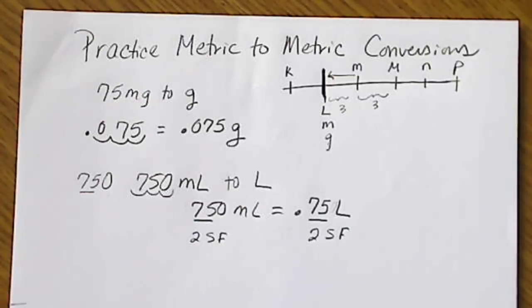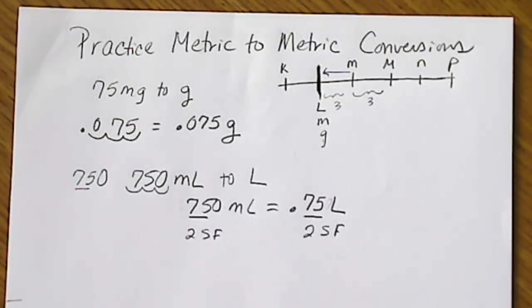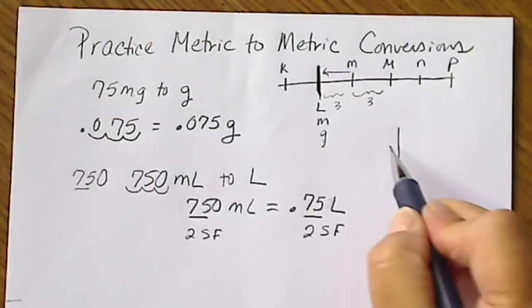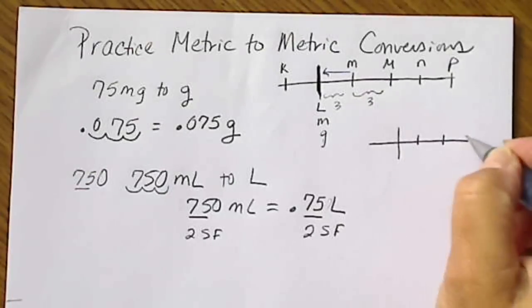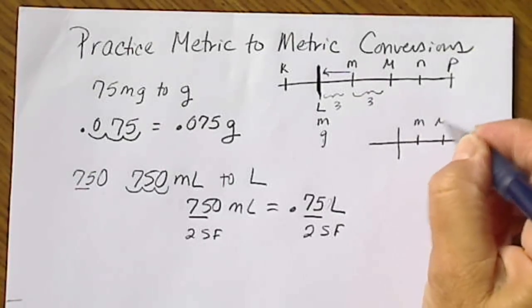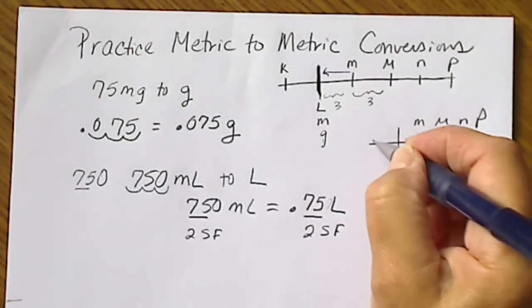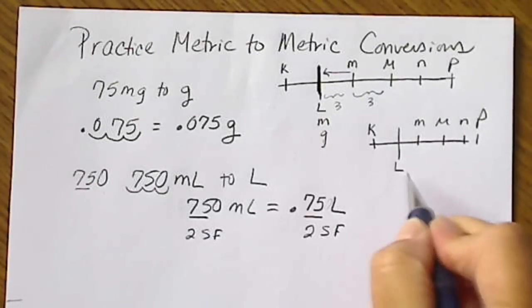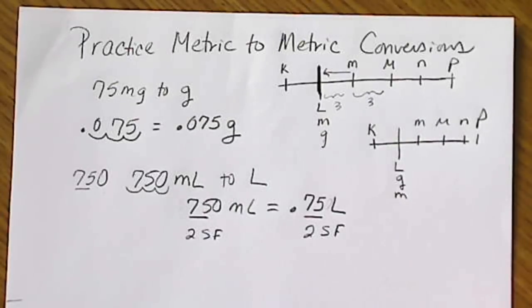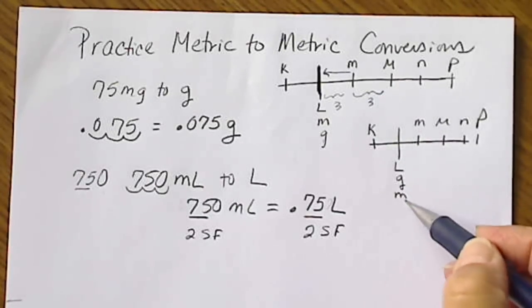And again, on the quiz or test, as long as we can reproduce this number line and put our tick marks here: milli, micro, nano, pico, and kilo is on the other side, and then it's not a bad idea to label those liter, gram, or meter.